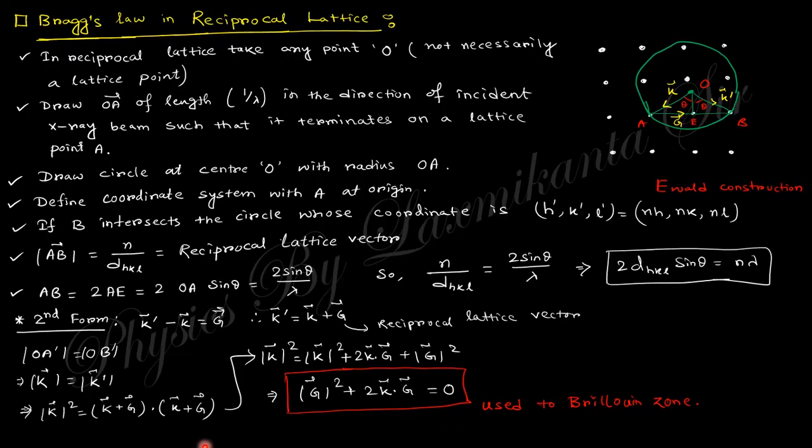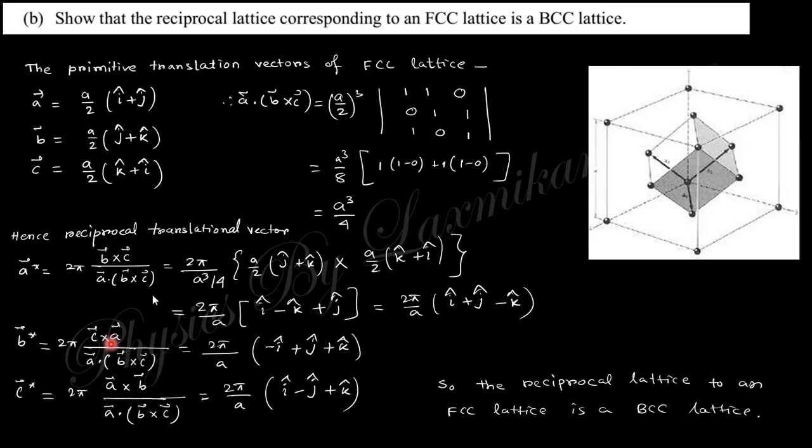Next question: Show that the reciprocal lattice corresponding to FCC (face-centered cubic) is BCC (body-centered cubic). The primitive cell in face-centered cubic will be like that. Take a·(b×c) as the volume, and the reciprocal translational vector a* = 2π(b×c)/(a·(b×c)). Put this value and you will find this expression for the reciprocal lattice vector of FCC, and this is nothing but the primitive cell for BCC. Hence the reciprocal lattice of FCC lattice is the BCC lattice.